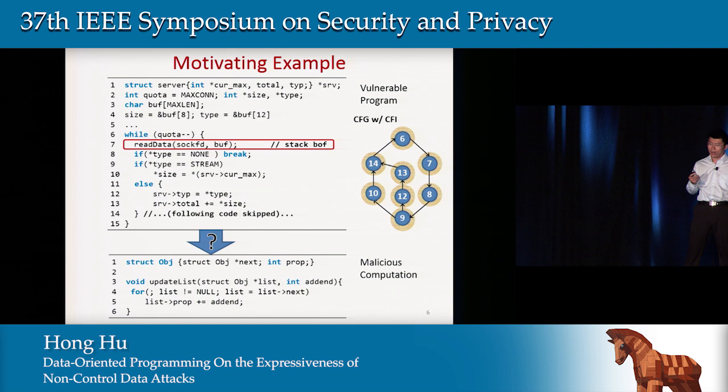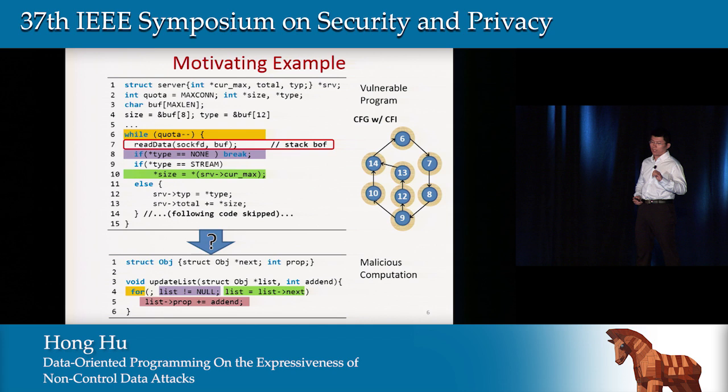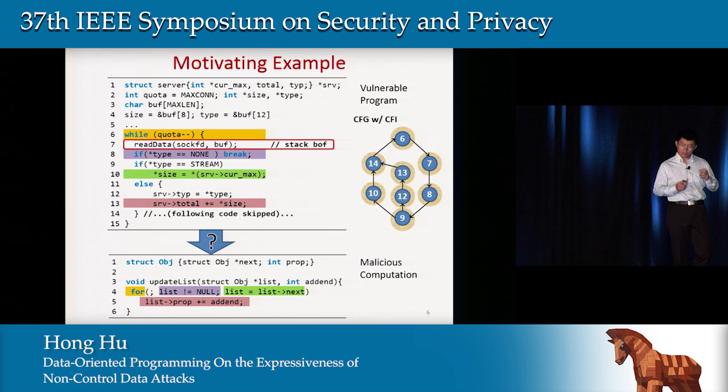Let's check the basic operations the malicious computation has. It has a for loop, a loop condition, a memory loading behavior, and an addition operation. If we check the vulnerable program, we can find similar computation components: a loop, a loop condition, a memory loading behavior, and an addition operation. So it seems we can use this vulnerable code to simulate this malicious computation — and actually, it is possible.